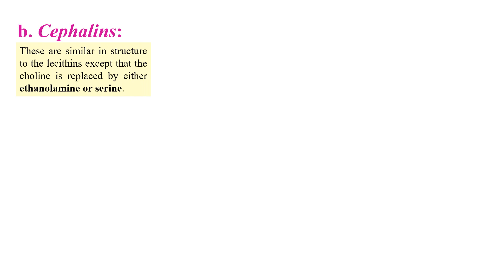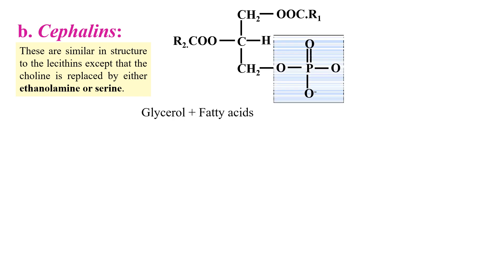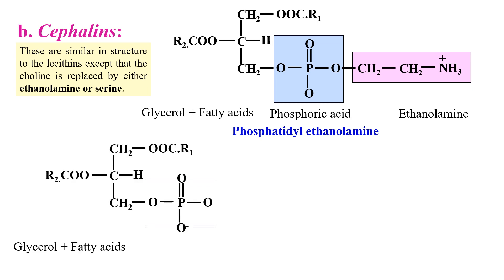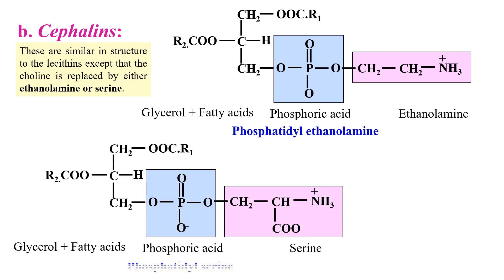The second type is cephalins, which are very closely related to lecithins, but the main difference is that the phosphoric acid is attached with ethanolamine, or it may also be attached with serine. If it is attached with ethanolamine, it is called phosphatidylethanolamine, and in the case of serine it is called phosphatidylserine. So the basic difference from lecithin is that here the phosphoric acid is attached with either ethanolamine or serine.